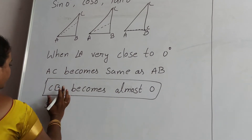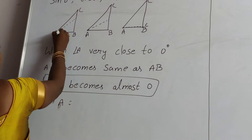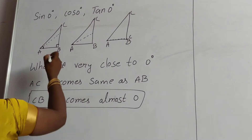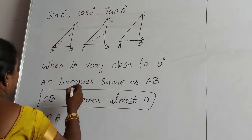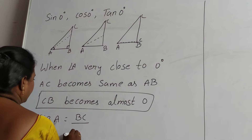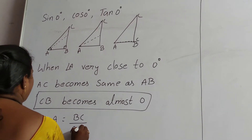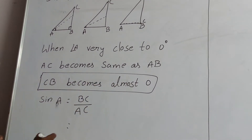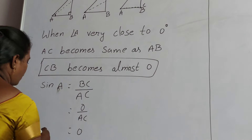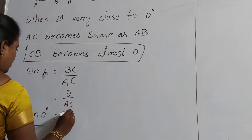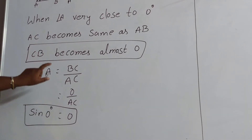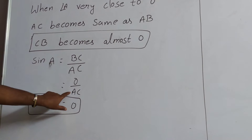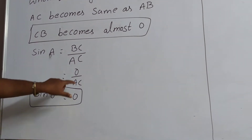Sin A means opposite side by hypotenuse, which is BC by AC. Since CB becomes almost 0, we get 0 by AC, and 0 divided by any number equals 0. Therefore sin 0 degrees equals 0. For cos A, it equals adjacent side by hypotenuse, which is AB by AC. Since AC becomes almost the same as AB, both are equal, so cos 0 degrees equals 1.